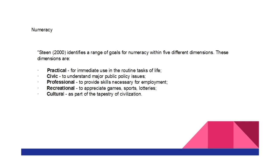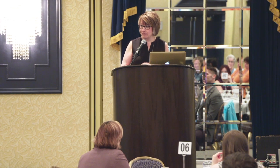In 2000, Lynn Steen identified a range of goals for numeracy within five different dimensions. The dimensions were: practical — meaning you needed to use it for immediate routine tasks of life; civic — so that you can understand major public policy issues; professional — to provide necessary skills for employment; recreational — so that you can appreciate games, sports, lotteries; and cultural — as part of our tapestry of civilization. Everyone has a definition. They all seem to have a common thread, but they're all a little bit different.